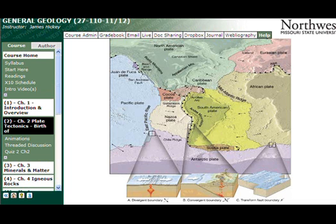They had a bunch of fantastic evidence promoting their idea. There was the fit of the continents — you could literally take a pair of scissors on a flat map, cut out around the continental shelf regions of all the continents, and slide them together into a former landmass, which we now refer to as Pangea. There was also the presence of identical fossils on continents separated by thousands of miles of ocean.